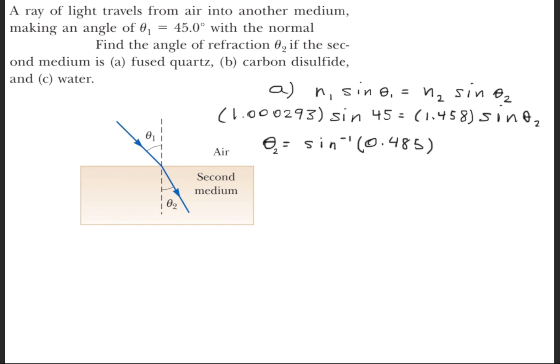Now we'll go ahead and rearrange so that we take the arc sine of 0.485. That gives us theta 2 is equal to 29 degrees.